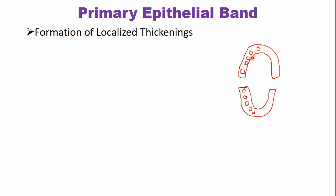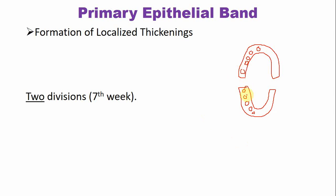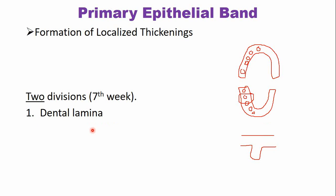These thickenings going inside the connective tissue will give rise to two divisions: one is the dental lamina and another one is the vestibular lamina. So each single thickening gives rise to two structures — the dental lamina and the vestibular lamina. This all happens during the seventh week of development.